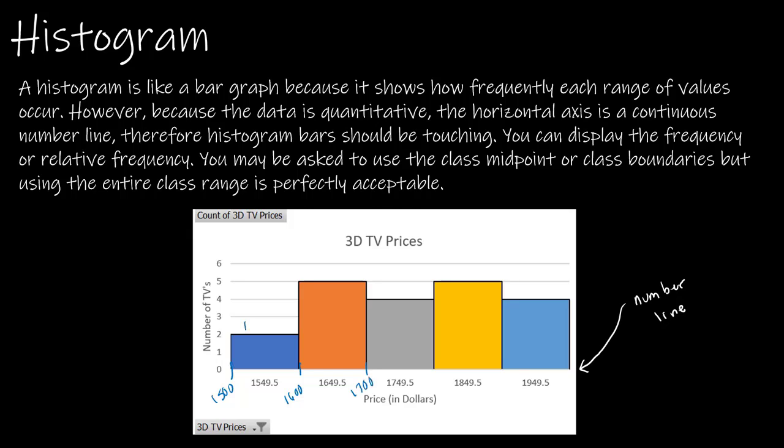So this bar represents from 1500 to 1599. And this next bar is from 1600 to 1699. If you joined us for our previous video where we use this data, we had created the frequency distribution using all of those values. So that's the real big difference between the two.